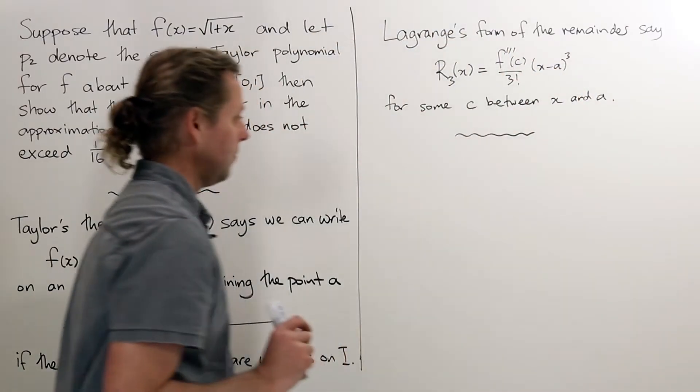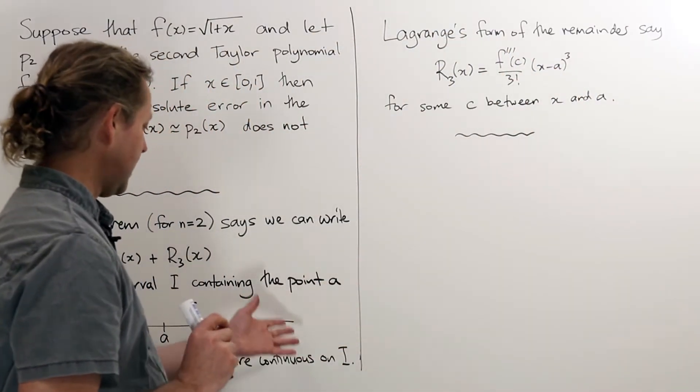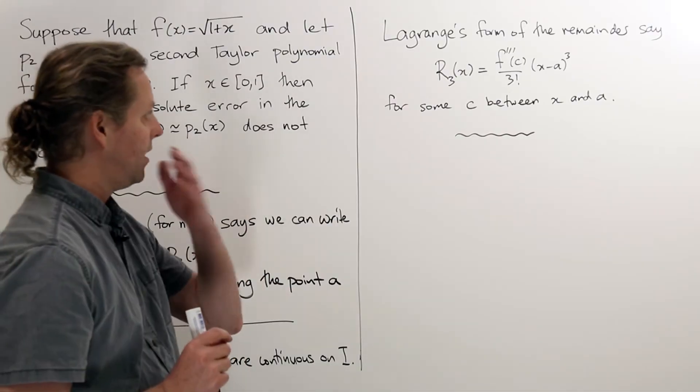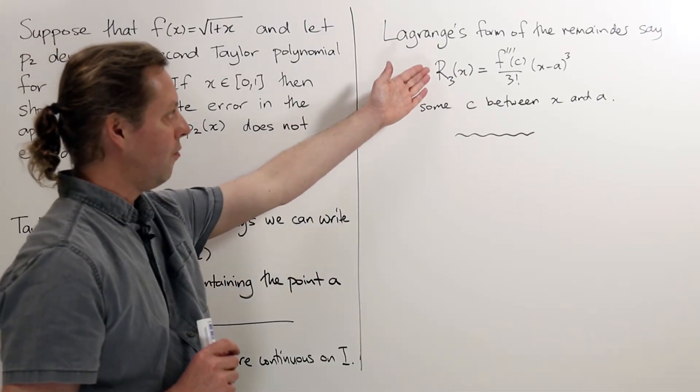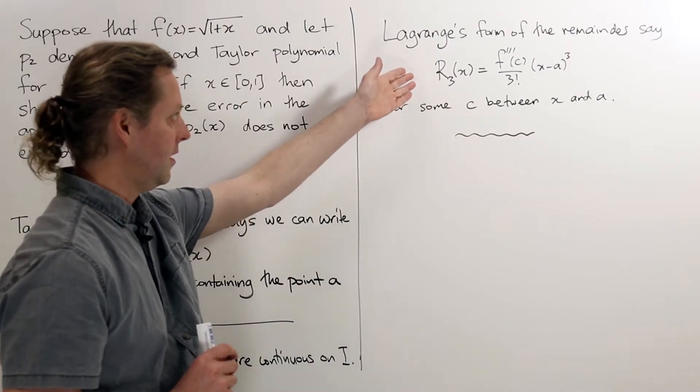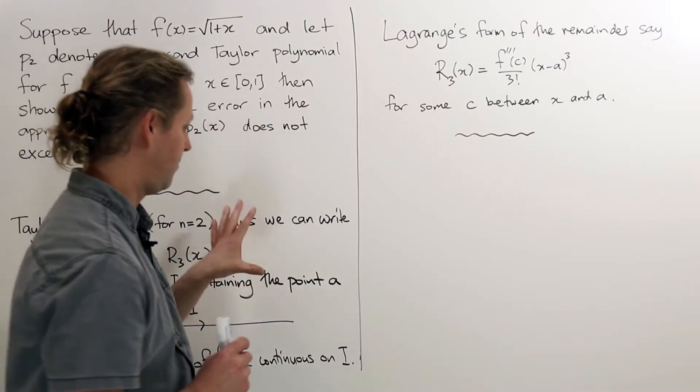So Taylor's theorem says that we can do this, but we're going to be using a slightly different form of the remainder than you would see perhaps in the statement of Taylor's theorem if you looked at the full statement.